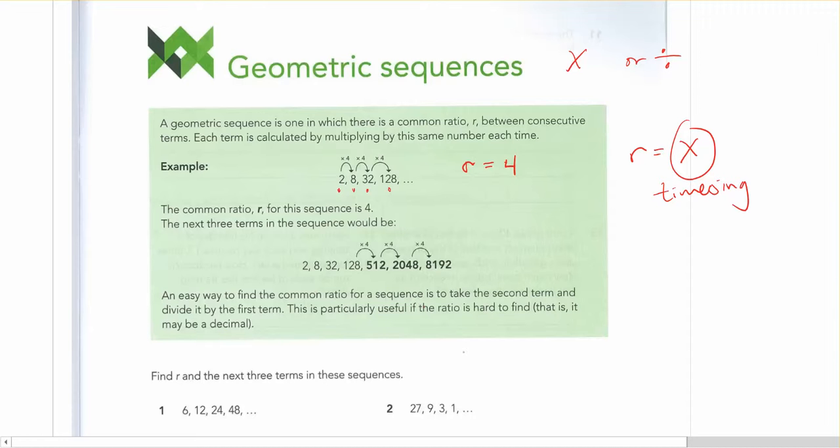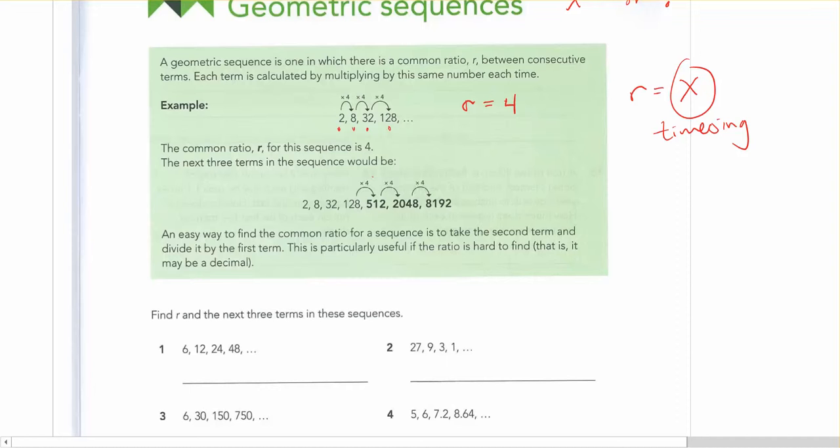A common way to figure it out if you're not sure is to think about doing some division, setting up a fraction. But like the other problems, once you know what r is, you can just times by 4, times by 4, and you'll get the next three terms in the sequence if you need to fill it in.